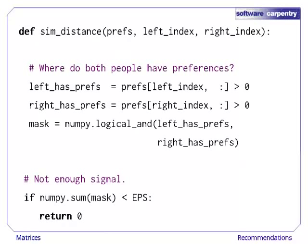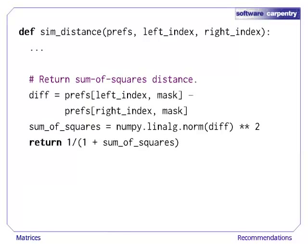Let's look at the code. First we note that left_index and right_index are rows of the data to compare. Since we only want to compare rankings if two people have both rated a paper, the first thing we do is create a mask that has a true for each column where both rows are non-zero. If no papers were rated by both people, then we return a zero. Finally, we compute the norm of the difference of the ratings and return the similarity score. Note that we can use the library function numpy.linalg.norm to compute the actual difference, but we need to square it to get the sum of squares.